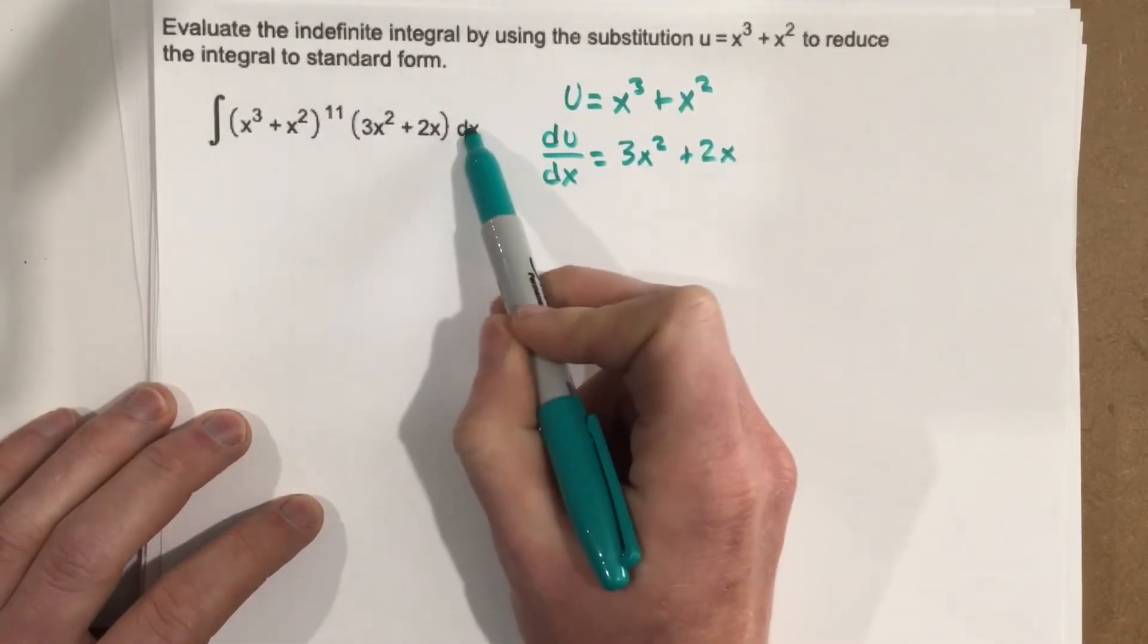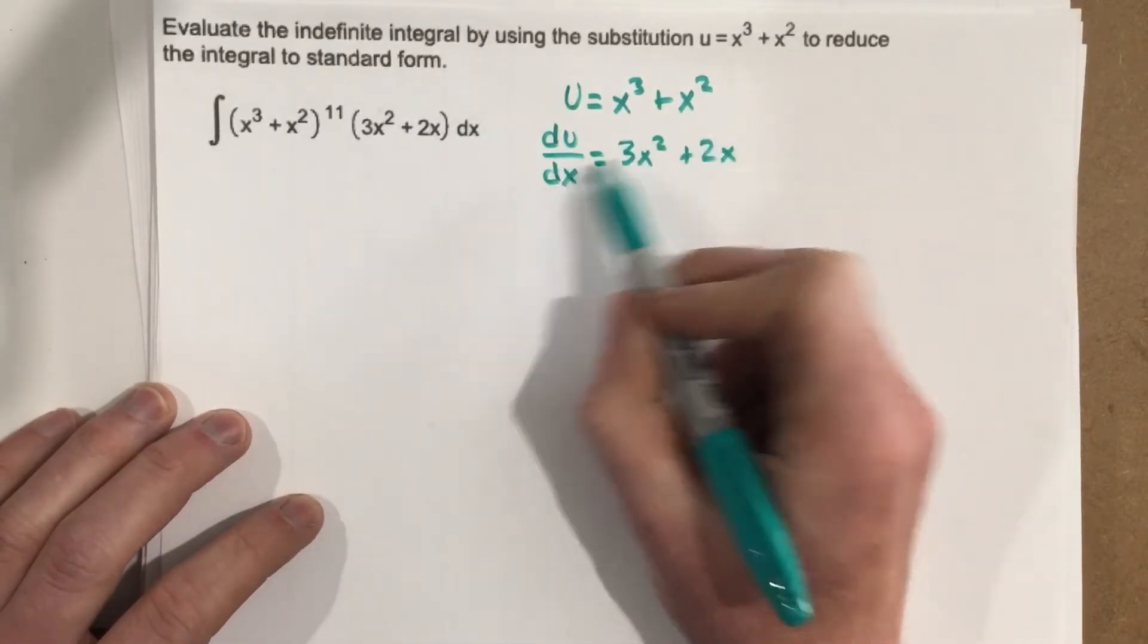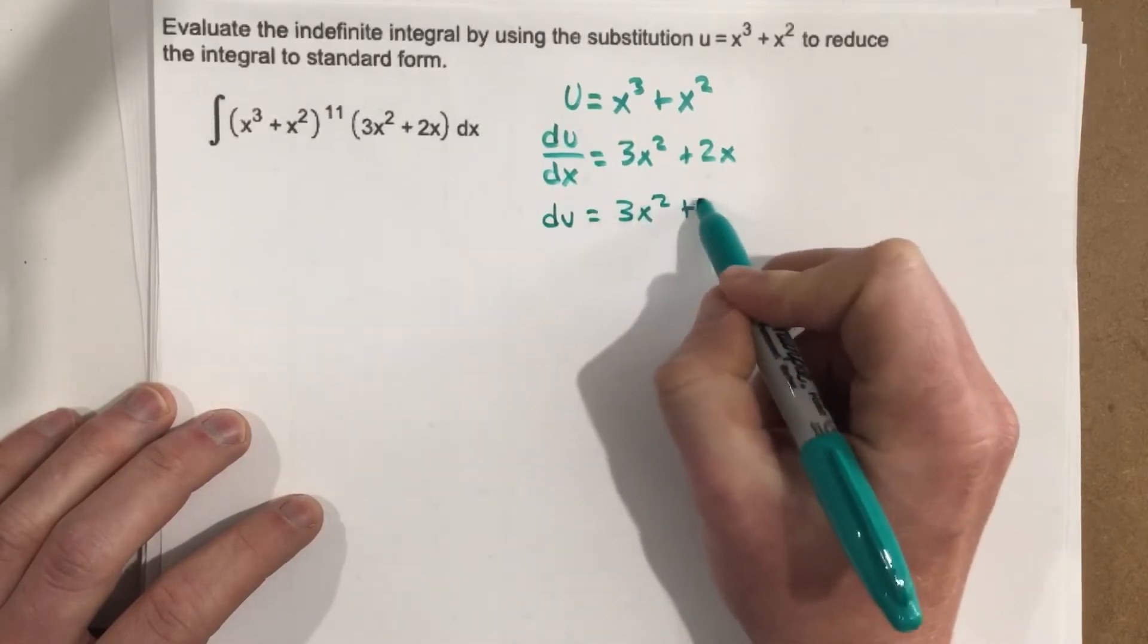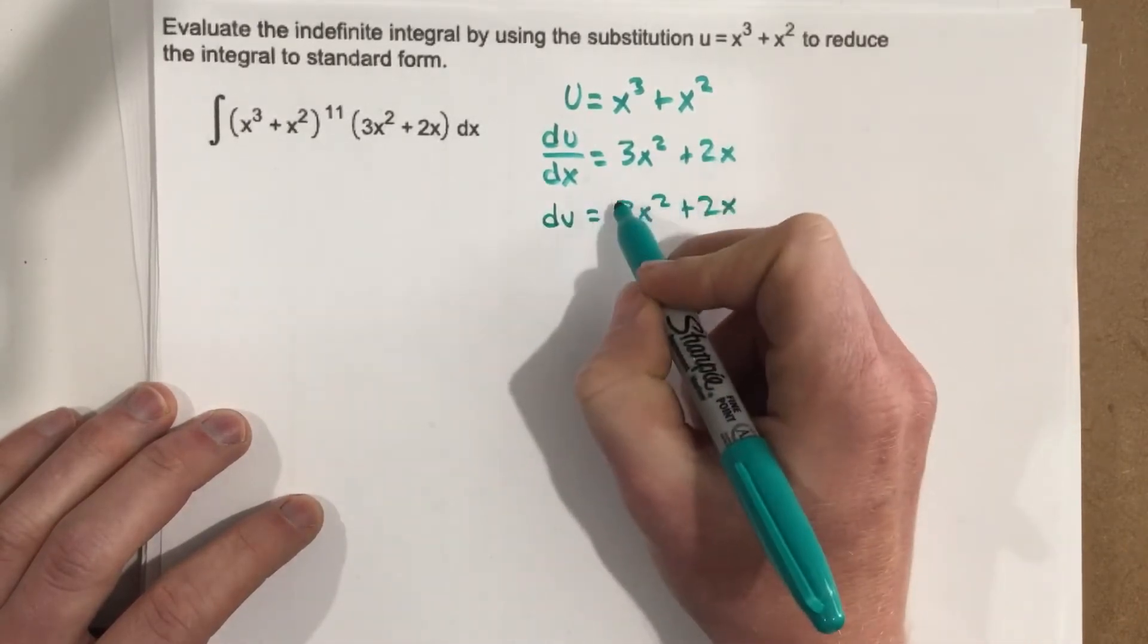I need to solve for this dx just like in the previous problem. So I'm going to multiply by dx. So du equals 3x squared plus 2x dx.